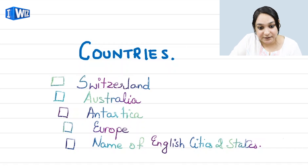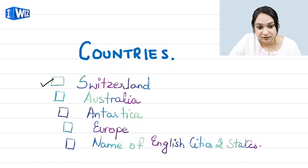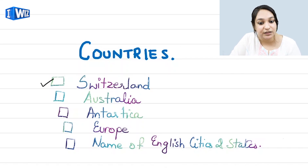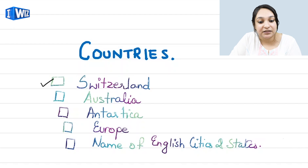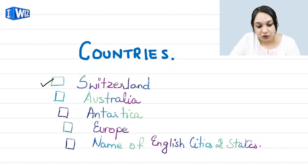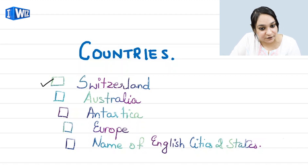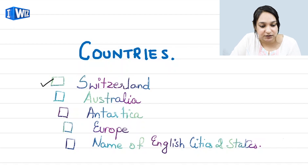First of all: Switzerland. People call it 'Switzerland' or 'Swissaland'. There is no spelling difference between the two — only a difference in pronunciation. Similarly, Australia and Australia. Then comes Antarctica. Now remember, in 'Antarctica' the R is almost silent, but that does not mean you make it silent in your spelling as well.